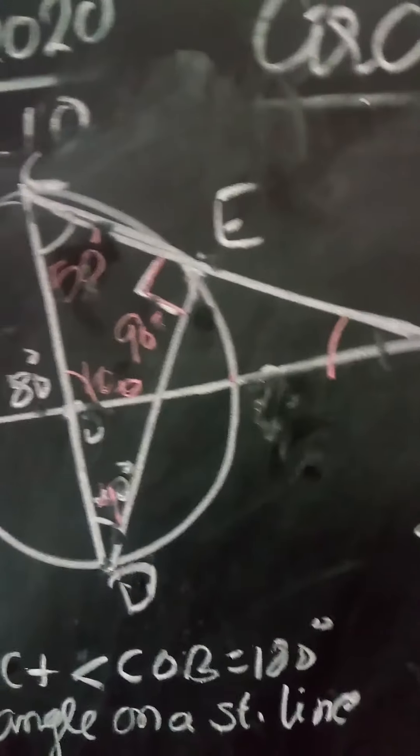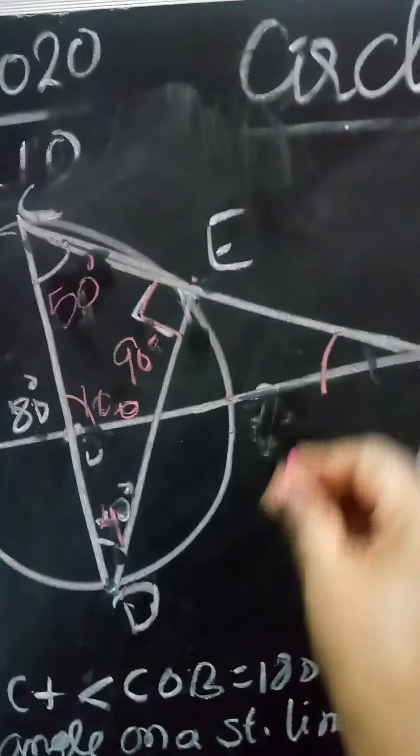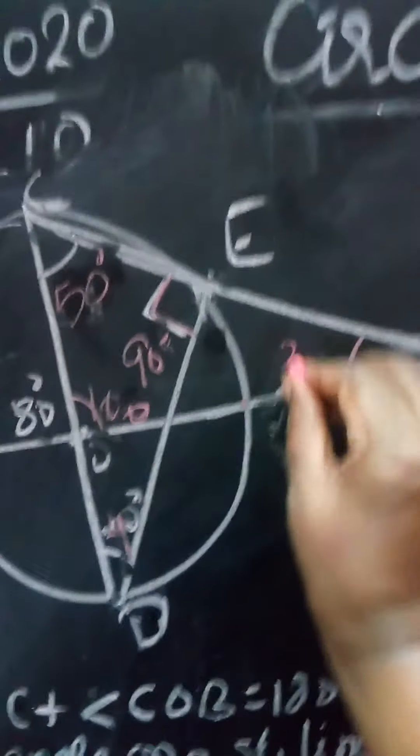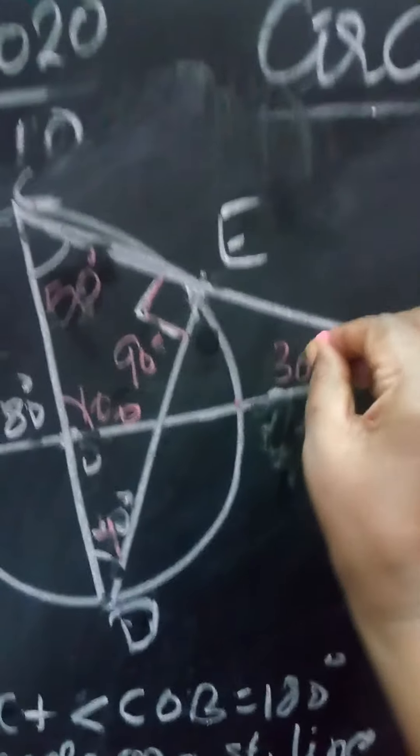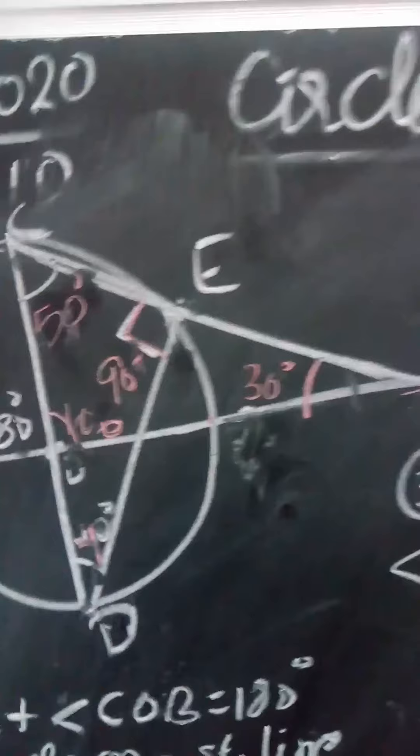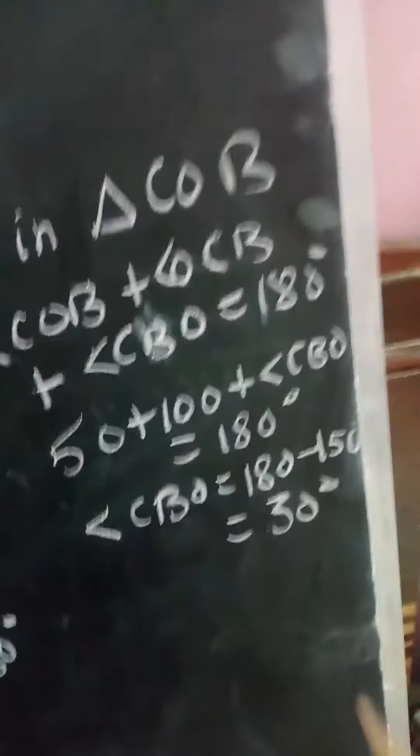So 50 plus 100 is 150, and 180 minus 150 will be 30 degrees. So this angle will be 30 degrees.